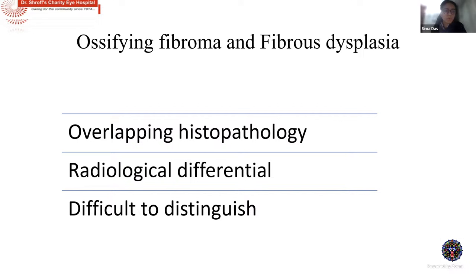Moving to the other common primary bone tumors: fibrous dysplasia and ossifying fibroma. These are confusing because they have overlapping histopathological and radiological findings. The differential is mostly radiological, but even that can be difficult, with features of both sometimes present in a single lesion. Both radiology and histopathology, along with clinical history, age, onset, and other parameters, must be considered when arriving at a definitive diagnosis.